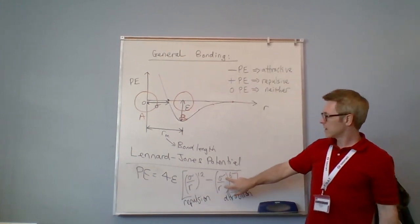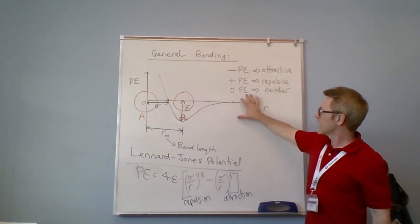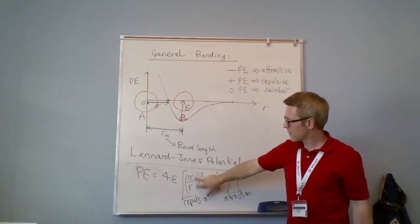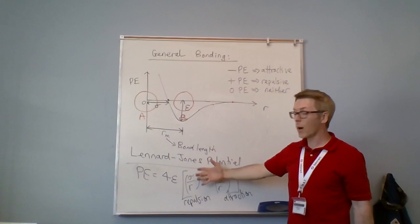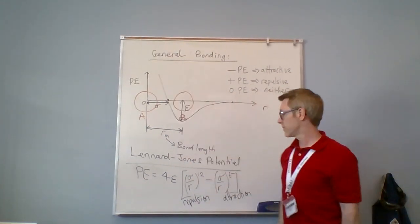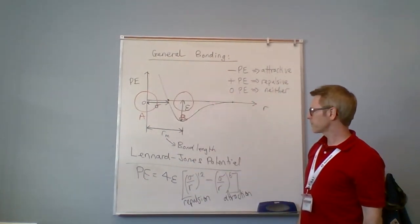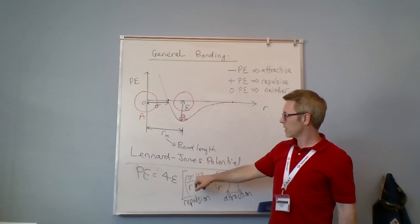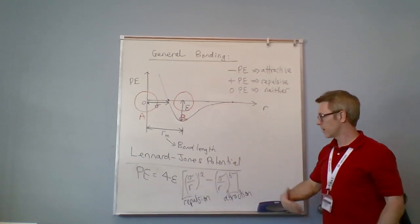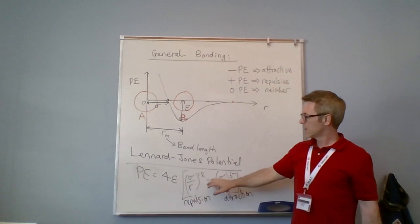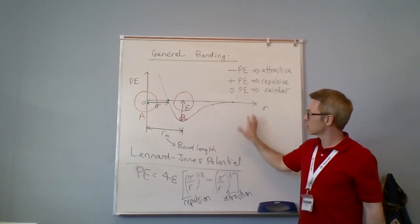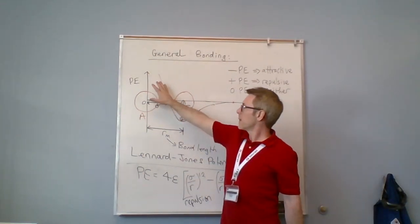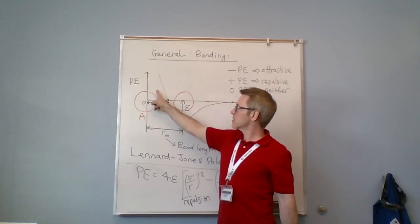So this distance ratio to the sixth power is over here, this is the attractive part. This distance fraction to the twelfth power, which ultimately dominates, is why this graph changes direction. Because as you can see, as r gets smaller the factor of 12 hits that numerator greater than this factor of 6. So at large r the attraction dominates, at smaller r the repulsion dominates, and essentially there's a distance beyond which there's no attraction.